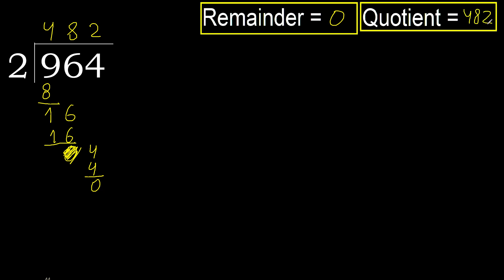Okay, remainder is 0. Therefore, 964 divided by 2 is 482.